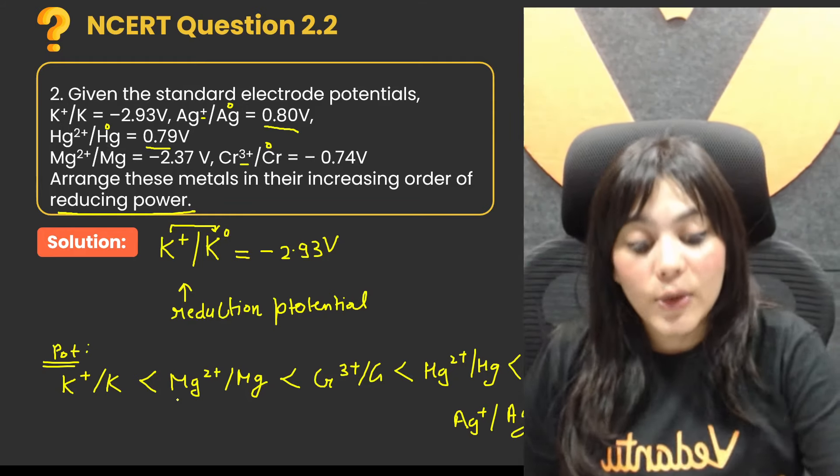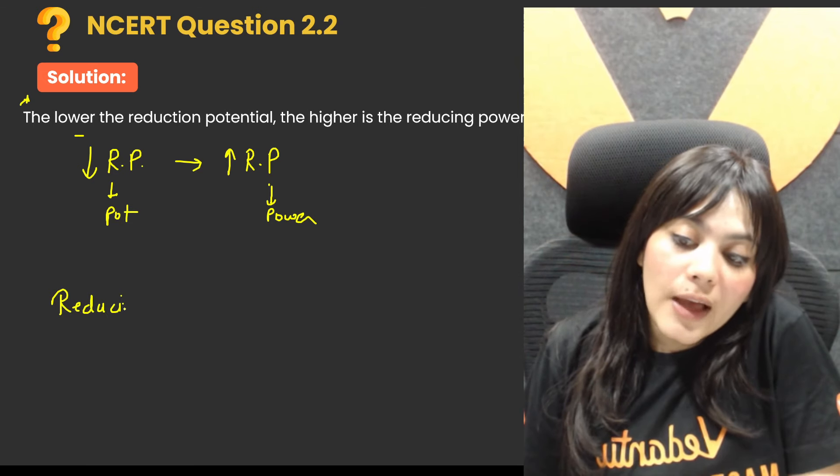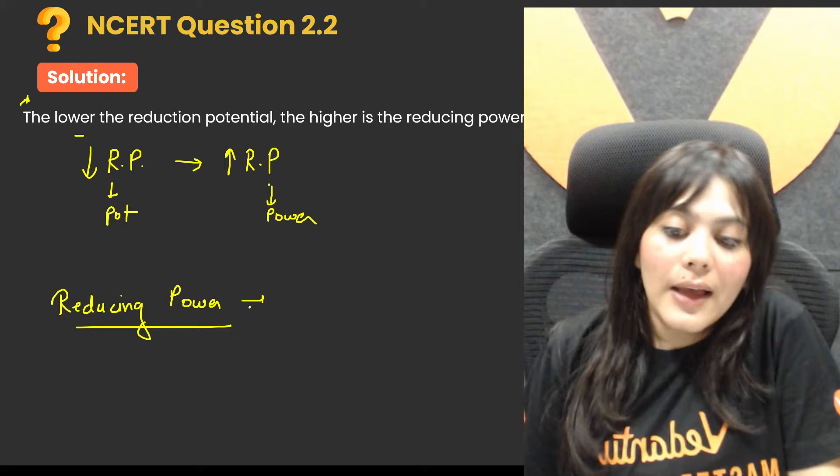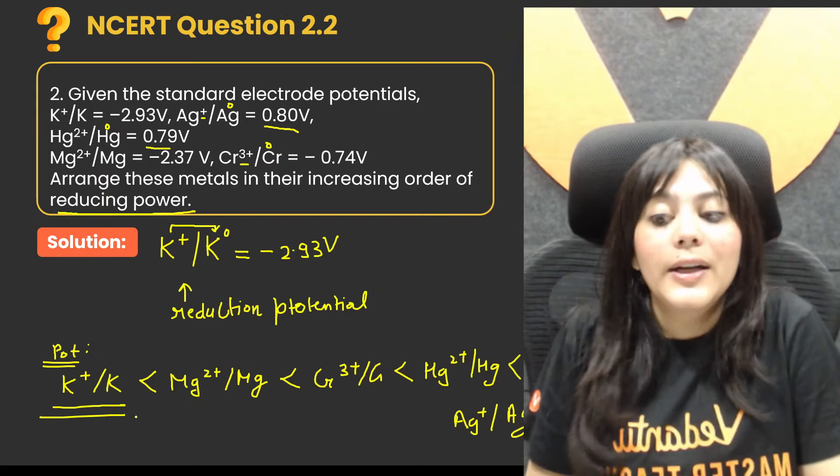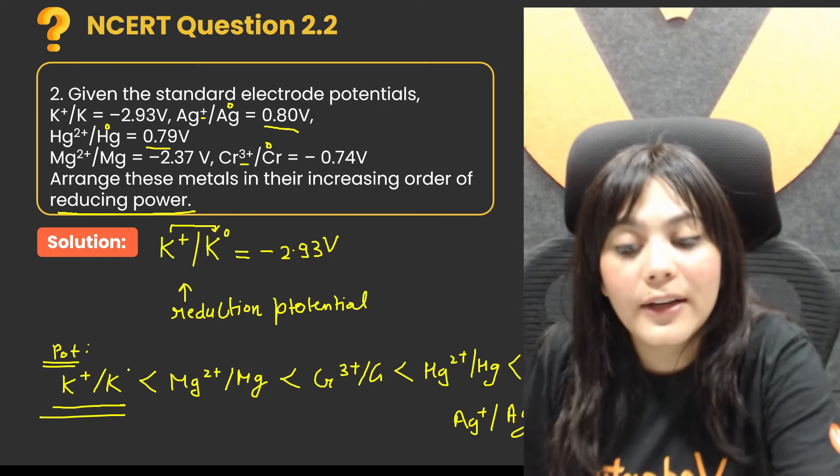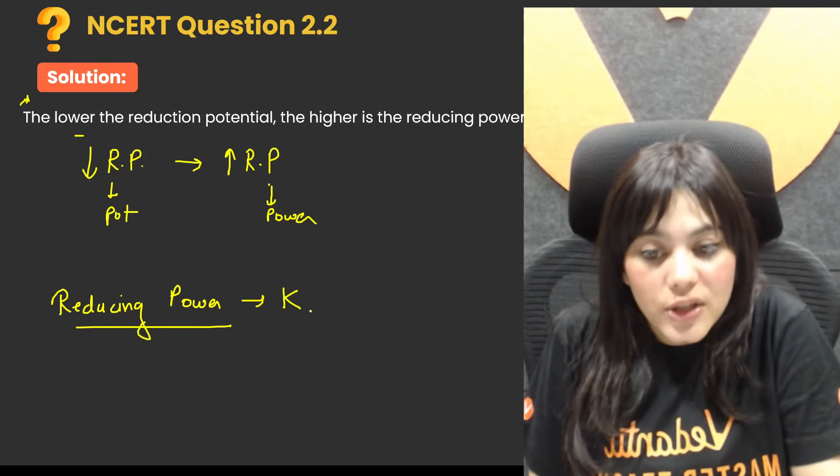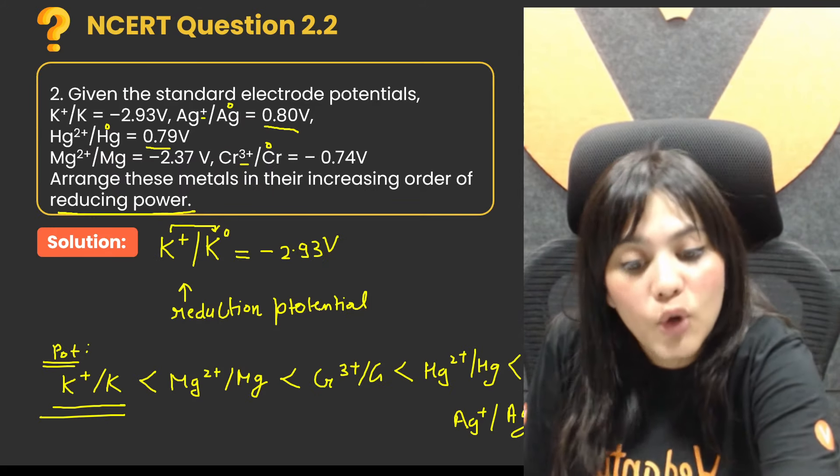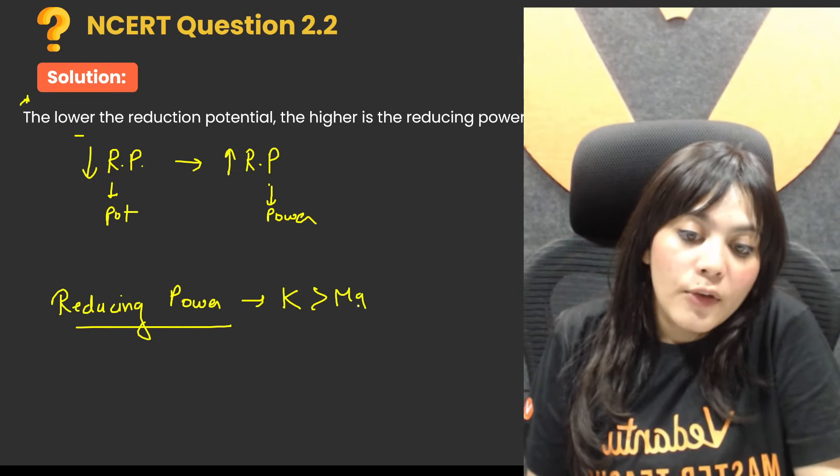So the reducing power order will be exactly opposite. The reducing power order will be exactly opposite. Whoever has the lowest reduction potential will have the highest reducing power. So the highest reducing is your potassium, then magnesium, then chromium, then mercury, then Ag.